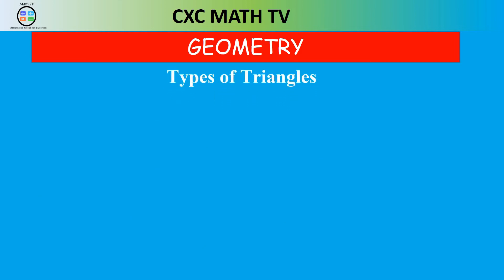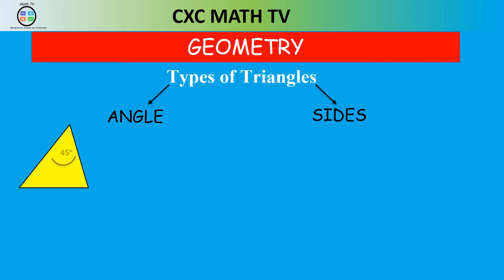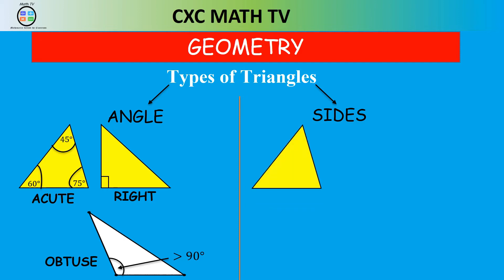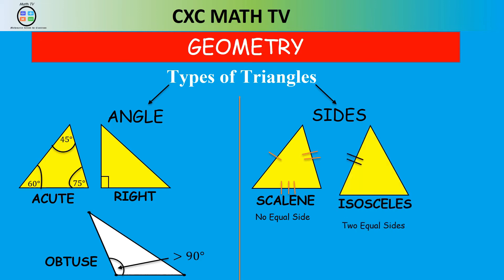Triangles are categorized by either angle or sides. By angle, we have the acute triangle where all angles inside the triangle are less than 90 degrees. The right angle triangle has one angle equal to 90 degrees, indicated by a little box. An obtuse triangle has one angle greater than 90 degrees while the other two are less than 90 degrees. By sides: a scalene triangle has no equal sides, an isosceles triangle has two equal sides, and an equilateral triangle has all sides equal in length.